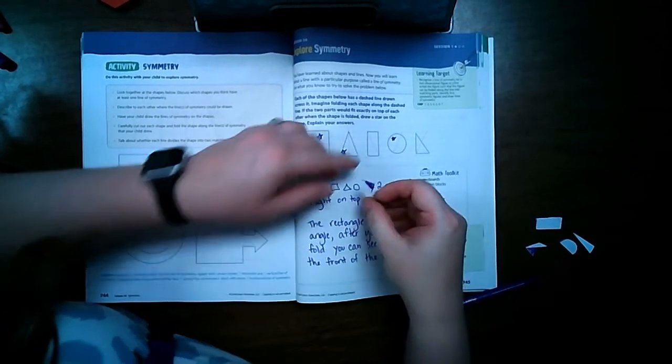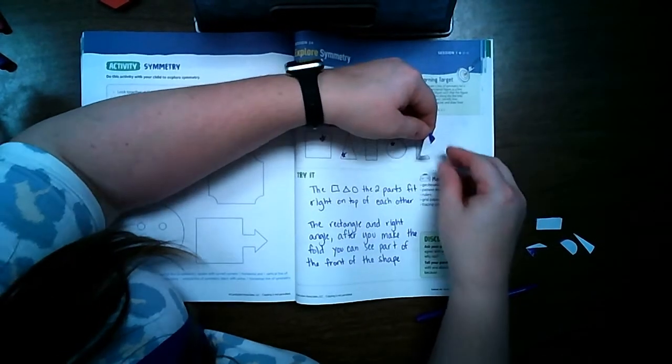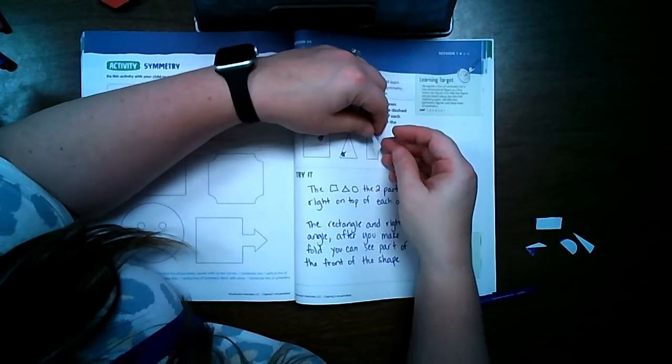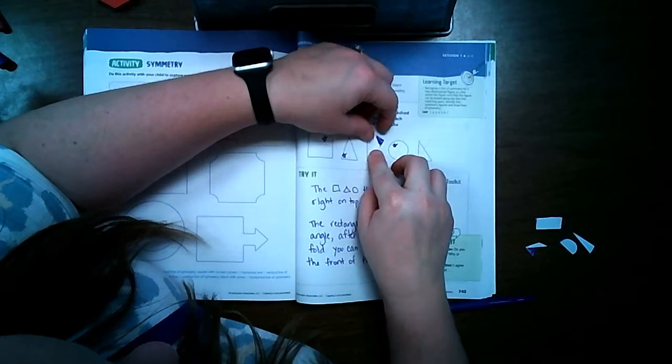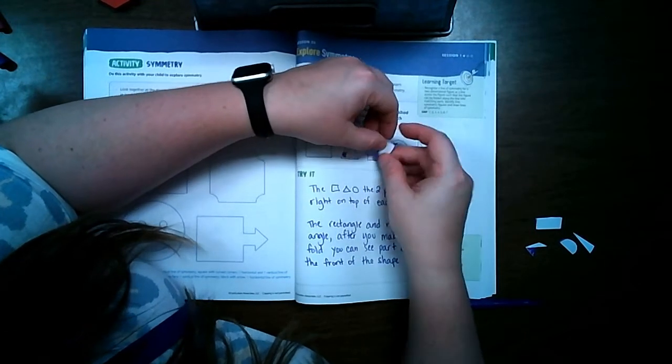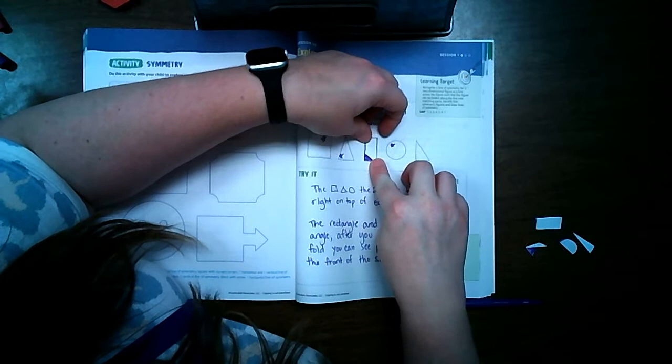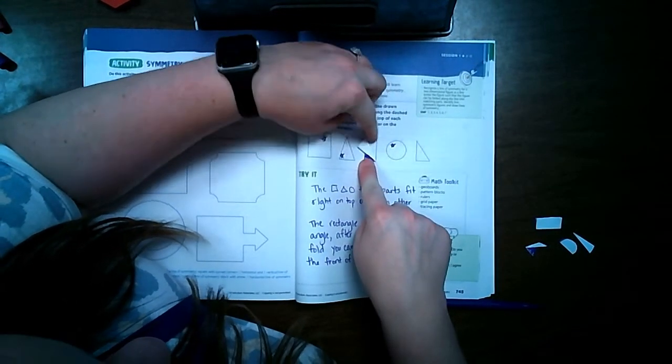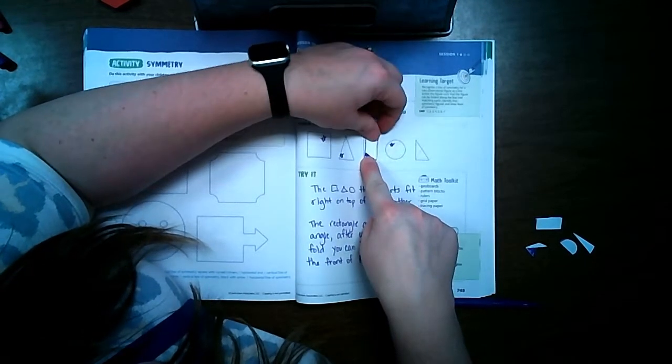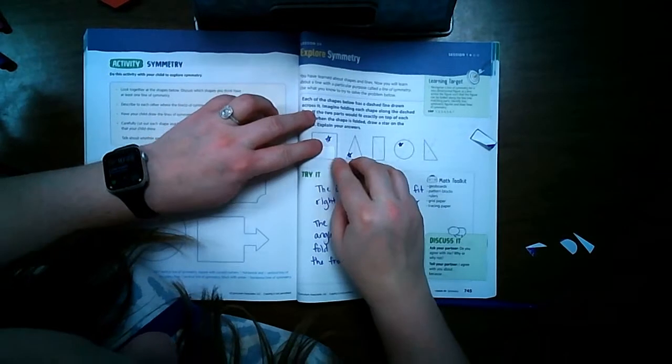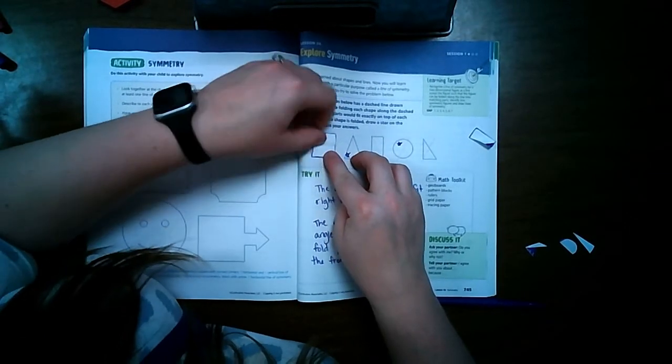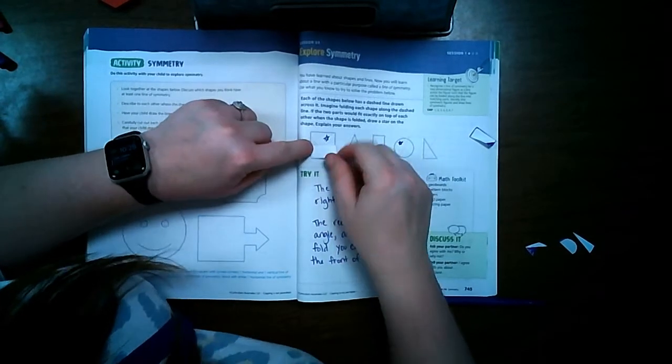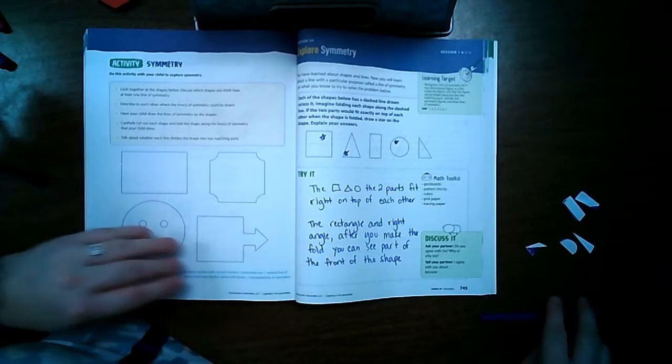For example, this right here. So if I had it on my shape right here, okay, and I folded this side down, I can still see that front piece of the shape. But with my square, when I fold it down, nothing from the front of that shape is showing. It's all covered. That is how you can tell if something is symmetrical.